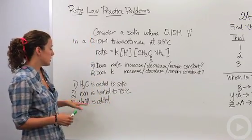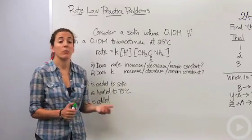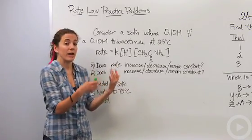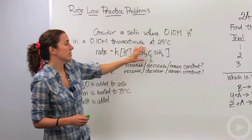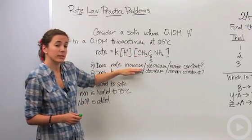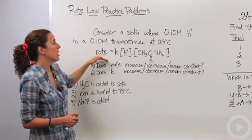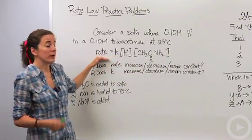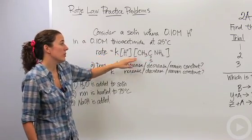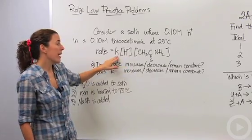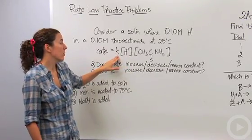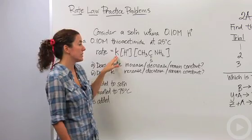Number two: the reaction is heated to 75 degrees Celsius. We're adding heat to this reaction, so it should proceed faster, and the rate does increase when we increase temperature. But how is that shown here? Well, K is temperature dependent. So even though concentrations remain the same, K will change when temperature increases. So yes, K will increase as well — that's the only time K will change.